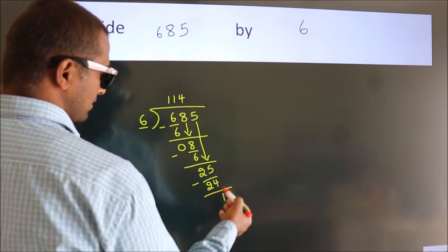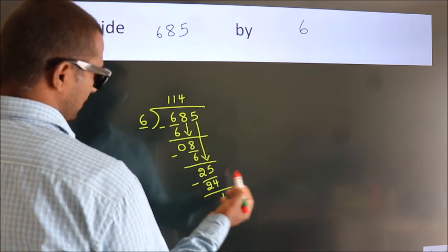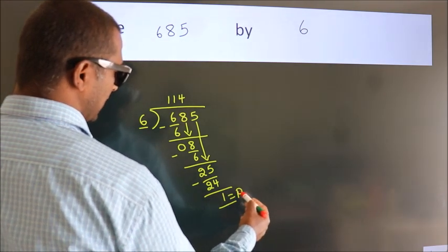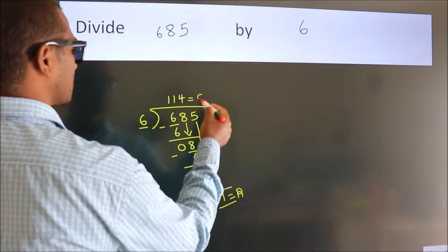After this, no more numbers to bring it down. So we stop here. This is our remainder. This is our quotient.